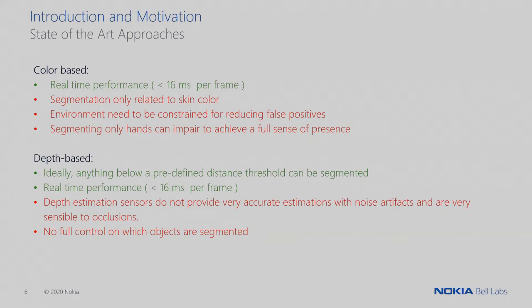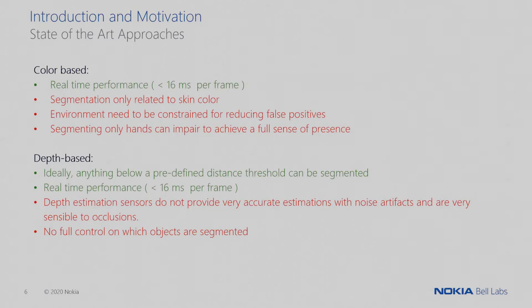What are the different approaches in the state of the art for egocentric human segmentation? The most naive one is the color-based approach, in which the body parts to segment are determined by some color threshold. The positive point is that it can perform in more than real time. However, the segmentation can be very poor as it is only related to skin color, the background environment needs to be constrained, and we can only segment skin color, which really limits the sense of embodiment and presence.